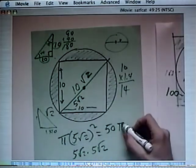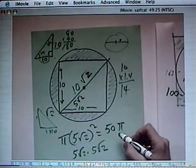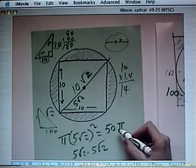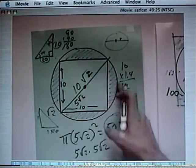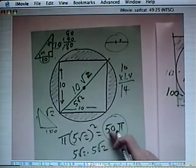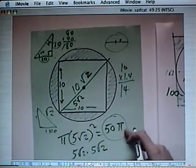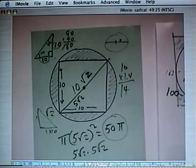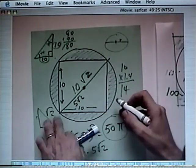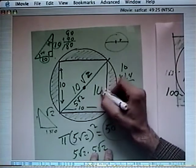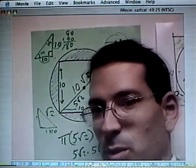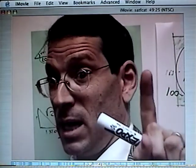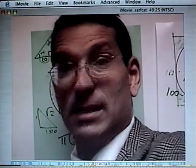So the secret here is the area of this entire circle here, the entire circle, is 50 pi. 50 pi. The area of 10 times 10 is 100. We said pi is about 3. So we take pi times 50. That's about 150.